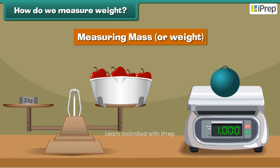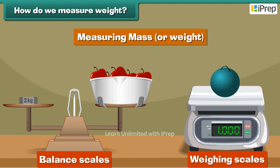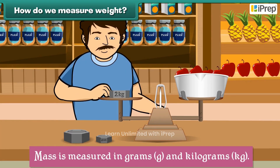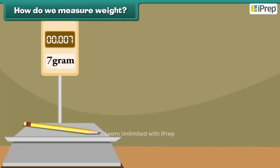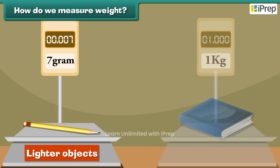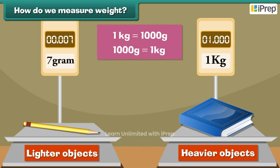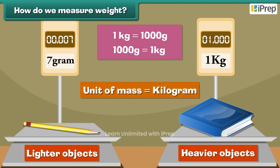We use balance scales or weighing scales to measure mass or weight. Mass is measured in grams (g) and kilograms (kg). We use grams to weigh lighter objects and kilograms to weigh heavier objects. 1 kg is equal to 1000 grams, and 1000 grams is equal to 1 kilogram. The standard unit of measurement of mass is the kilogram.